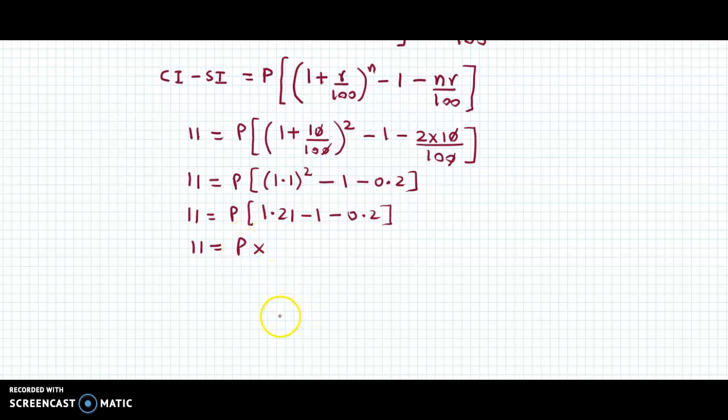If we perform the subtraction, 1.21 minus 1 minus 0.2 gives us 0.01. So we can write 11 equals P into 1 upon 100.